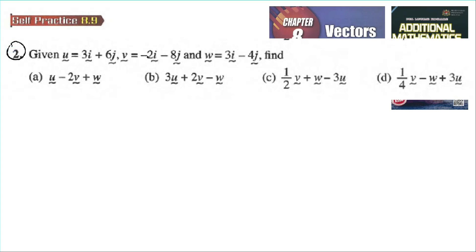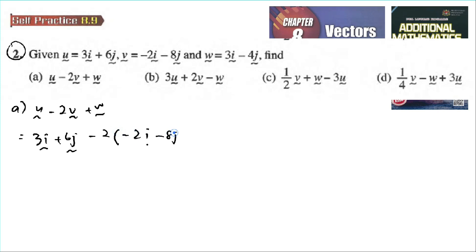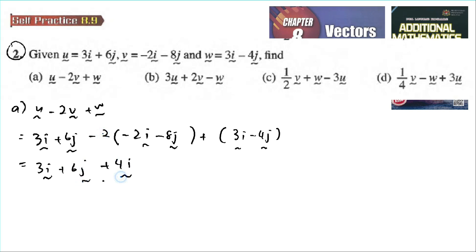Given vectors u, v, w, find a = u minus 2v plus w. So u is 3i plus 6j, negative 2v is negative 2 times (negative 2i minus 8j), and w is 3i minus 4j. We need to expand the bracket first, so we get 3i plus 6j, then negative 2 times negative 2 gives 4i, negative 2 times negative 8 gives positive 16j, plus 3i minus 4j.